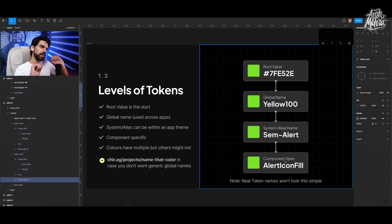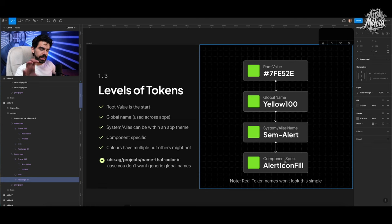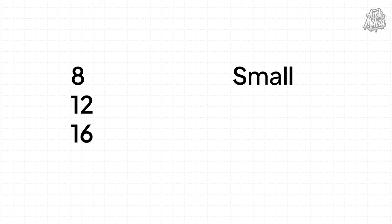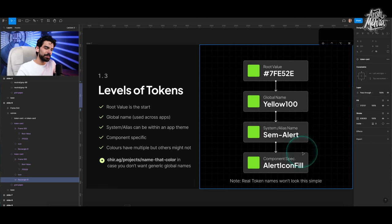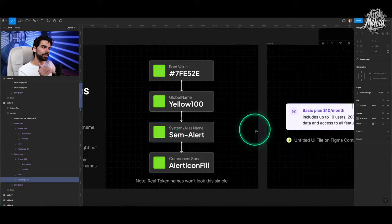Colors can have multiple levels of layering. When a company is being built, you make a set of hex codes, give them names, and different teams — marketing, mobile, web, iPad — all pick from that same bank of global names like 'yellow100'. The mobile team uses yellow100 in its own system, the iPad team in its own. So you start with a root value, give it a global name, then have system-specific or alias names. But for other tokens like font sizes, people usually keep just one level: 8 = small, 12 = medium, 16 = large — no further branching.